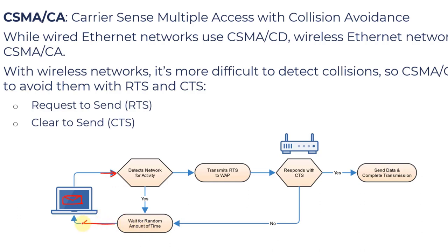Once the network is clear, the device sends an RTS — a Request to Send — to the wireless access point, essentially asking permission to transmit. The access point responds with a CTS — Clear to Send — giving the okay to proceed. If no CTS is received, the device waits a random amount of time and starts the process over. Compared to CSMA/CD, CSMA/CA uses this simplified RTS and CTS process to manage transmissions.